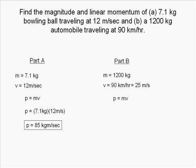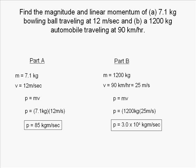We again choose P equals MV. Now we can substitute our numbers in and solve for P. P equals 3.0 times 10 to the 4th kilogram meters per second.